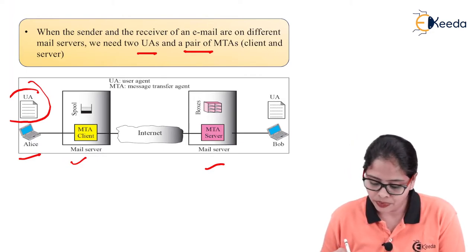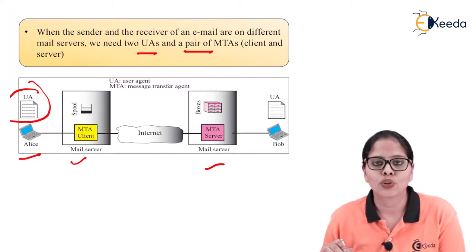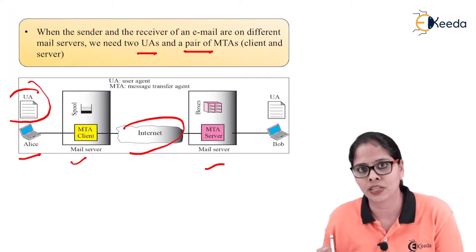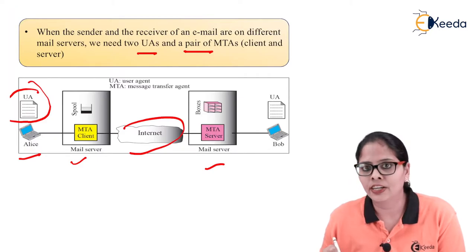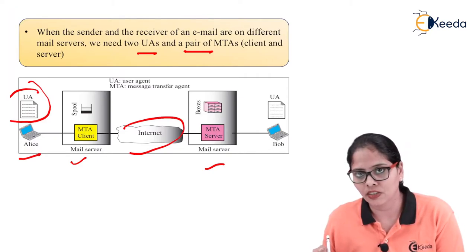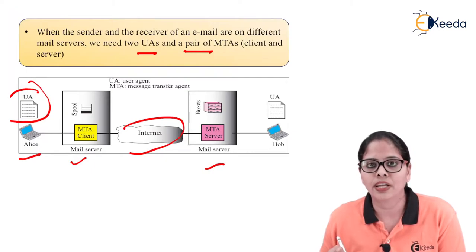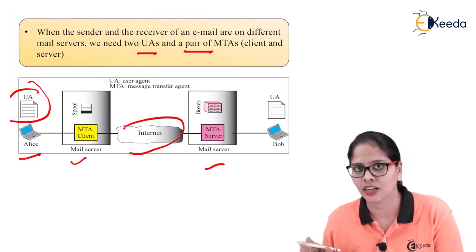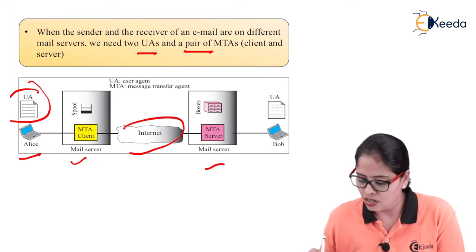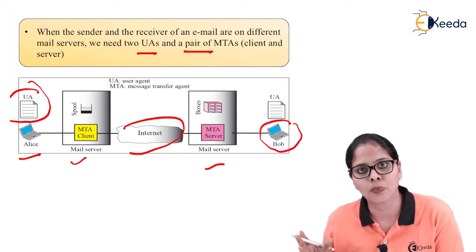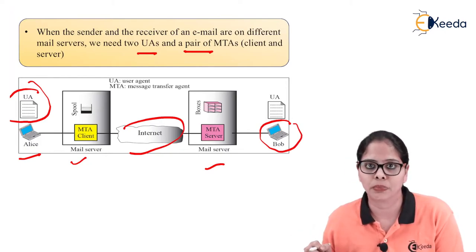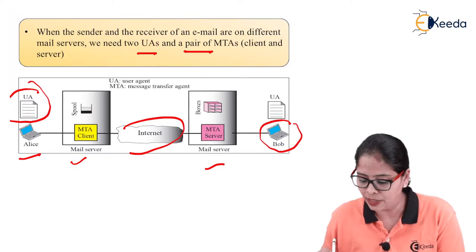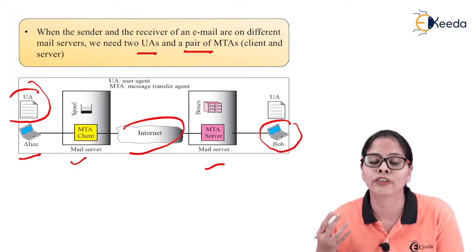The mail server puts the mail into a queue and sends it to the internet. Here you are connecting two mail servers, so you need the internet. It is received by the MTA server. The MTA client is used to push the mail, and you need the MTA server at the other end to receive it. Once the mail is received, Bob will open his mailbox and retrieve the mail. The difference from the last scenario is that here you need an MTA client and MTA server because there are two different mail servers.